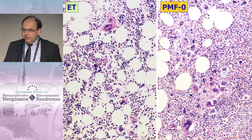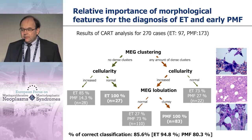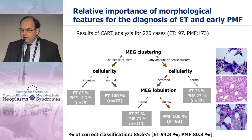In reality, you see the staghorn-like megakaryocyte nuclei, and here you see the clustering of megakaryocytes in early pre-fibrotic myelofibrosis with more dense cloud-like nuclei, with less erythropoiesis, and here more erythropoiesis in WHO-characterized essential thrombocythemia.